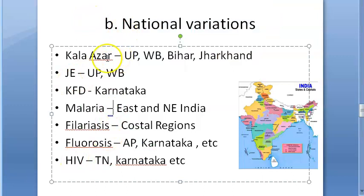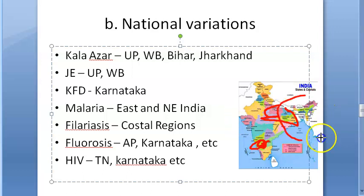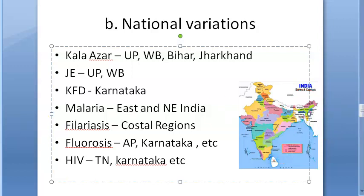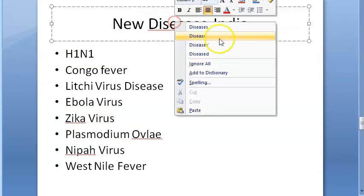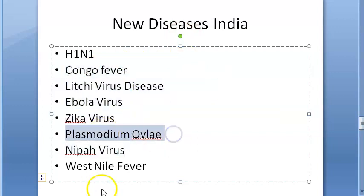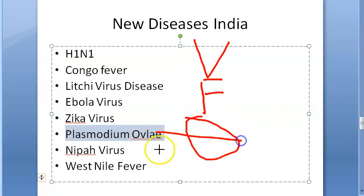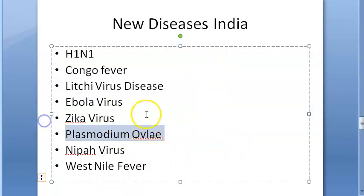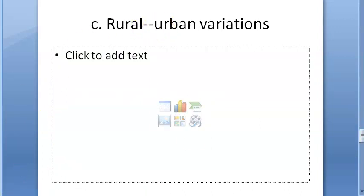To summarize national variations: Kala Azar is more in UP, West Bengal, Bihar, Jharkhand; Kyasanur Forest Disease in Karnataka; malaria in east and northeastern India; filariasis in coastal regions; fluorosis in Andhra Pradesh, Karnataka, etc.; HIV more in Tamil Nadu and Karnataka. New diseases entering India include COVID-19, H1N1, Congo fever, Litchi virus, Ebola, Zika, and plasmodium ovale, Nipah, and West Nile fever.